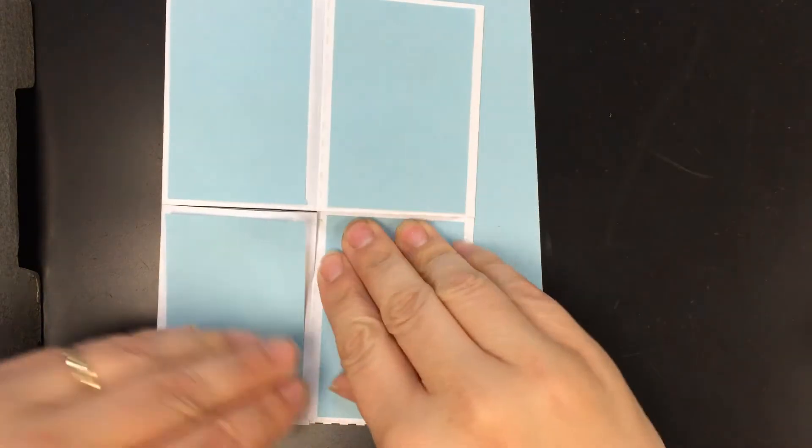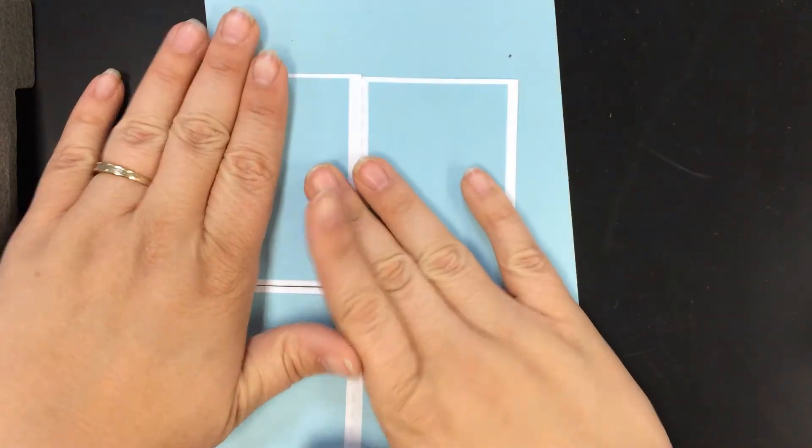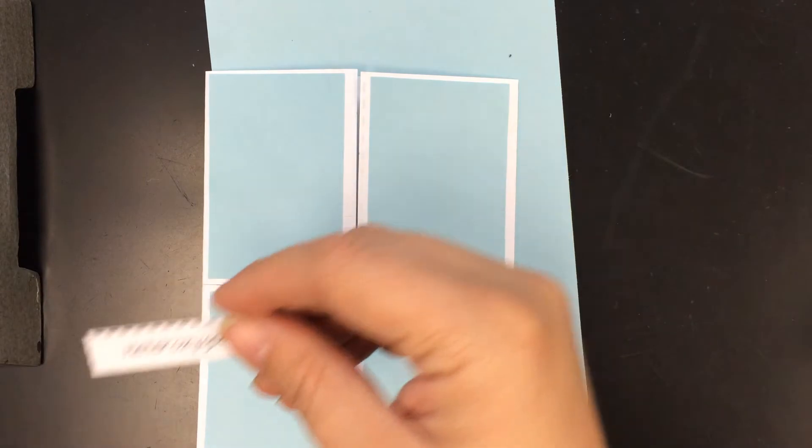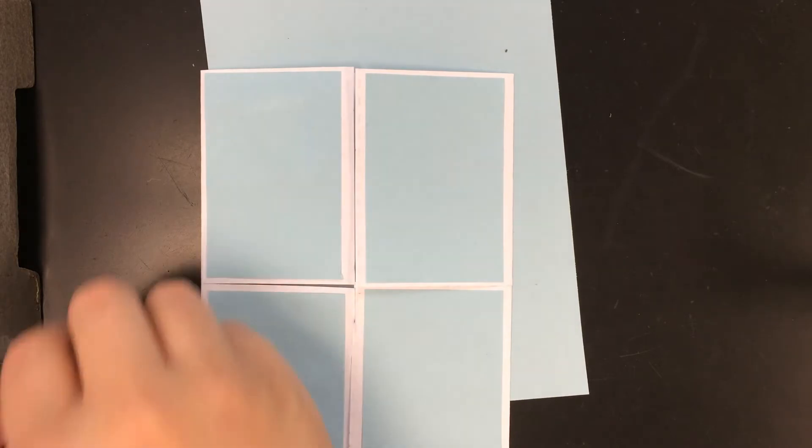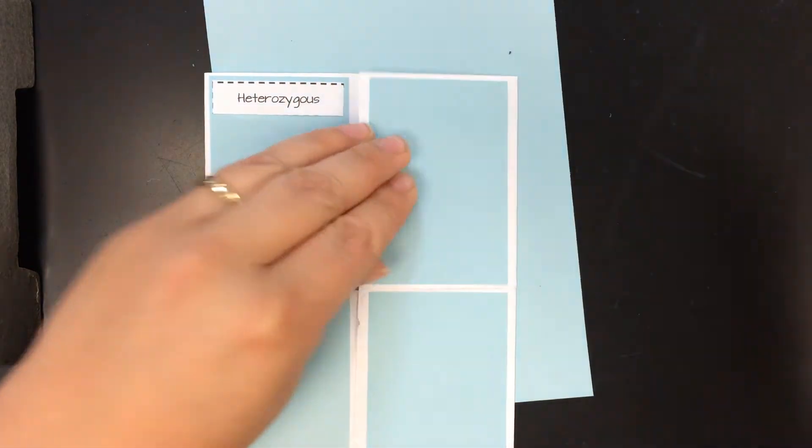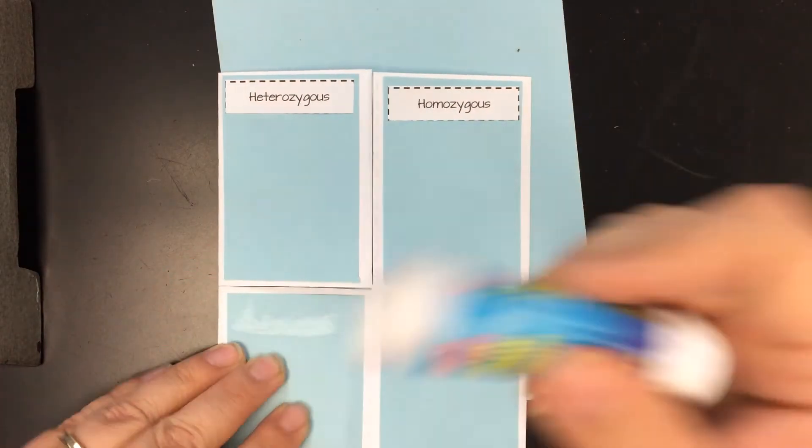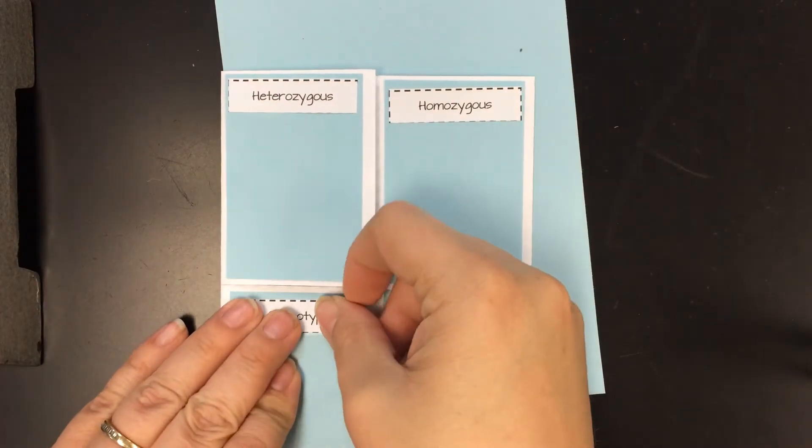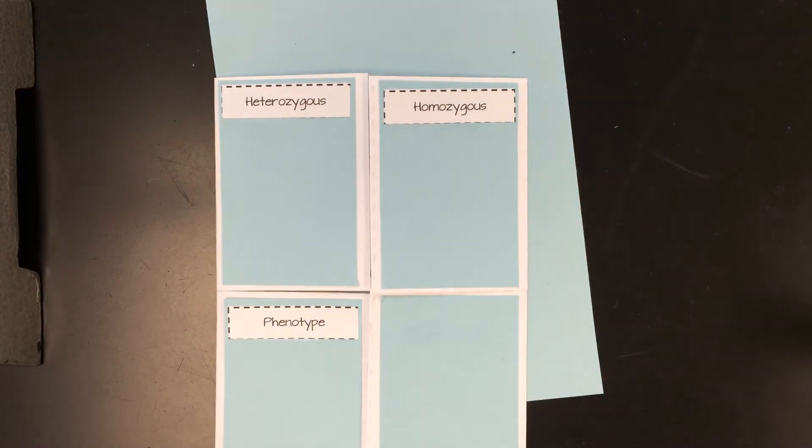So now why am I doing this other than to make it look absolutely adorable? Well on the outside here I am going to put my vocabulary terms. So those four smaller ones that you cut out like heterozygous, homozygous, genotype, and phenotype, that's what we're doing. So I'm going to put a little slash of glue at the top and let's go ahead and put heterozygous up here. And you can do them in any order, it really doesn't matter because we're just focusing on what those words are. So here's my heterozygous, here's my homozygous, phenotype, and genotype.